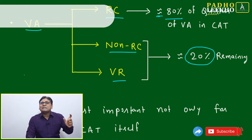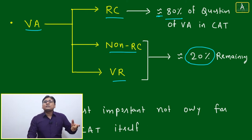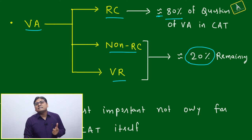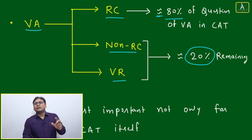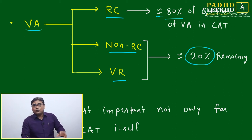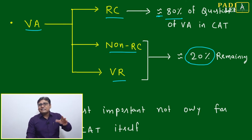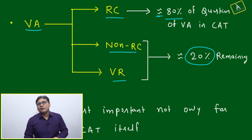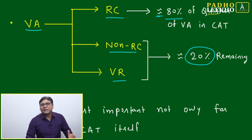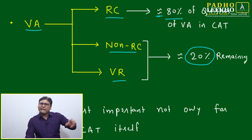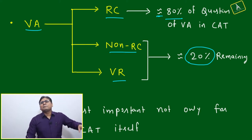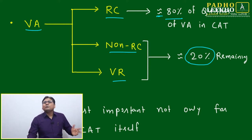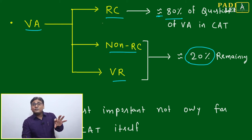If the percentile difference between any two sections is more than 7 to 10 points, your chances of getting a call from top colleges are very bleak even with a high overall percentile. This is a management lesson itself: CAT has three sections and you have to balance all three. If all three sections are around 95 to 96 percentile, your overall will be around 98 and you will get calls from IIM Ahmedabad, Bangalore, Kolkata, Lucknow, Indore — everywhere.